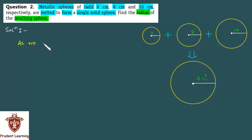As no metal is lost we have volume of resulting sphere equal to the sum of volumes of 3 spheres that are melted. Now we know that volume of a sphere is given by 4 by 3 pi r cube. We have already assumed the radius of the resulting sphere as r.